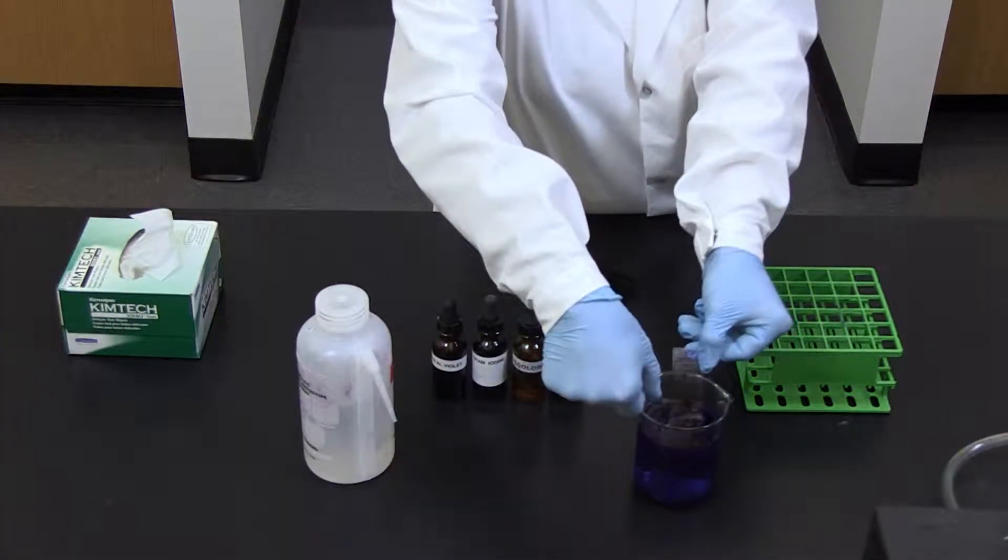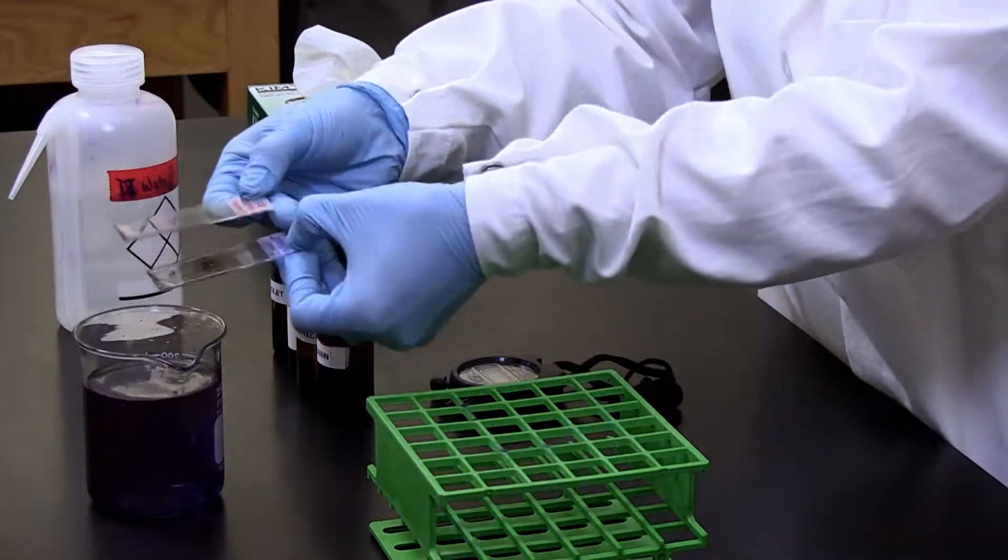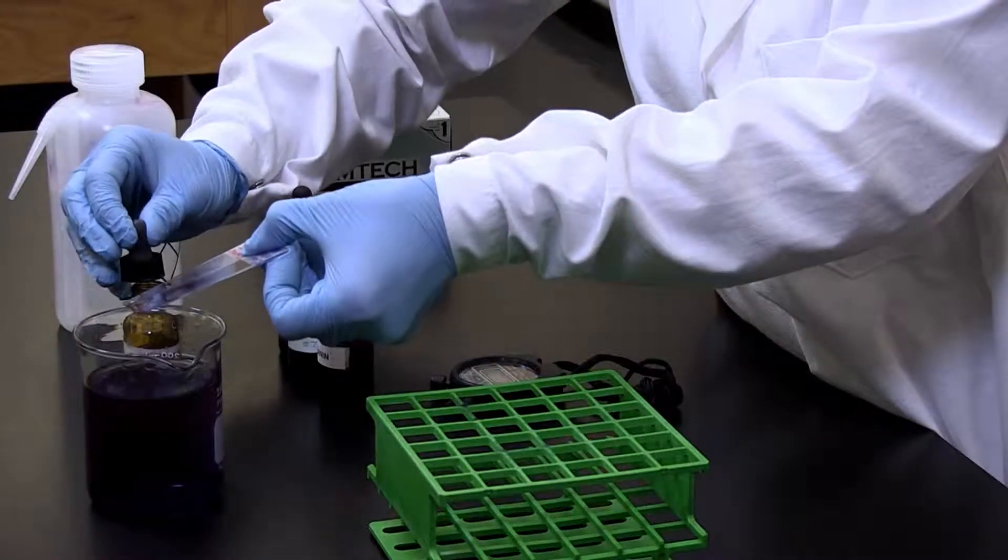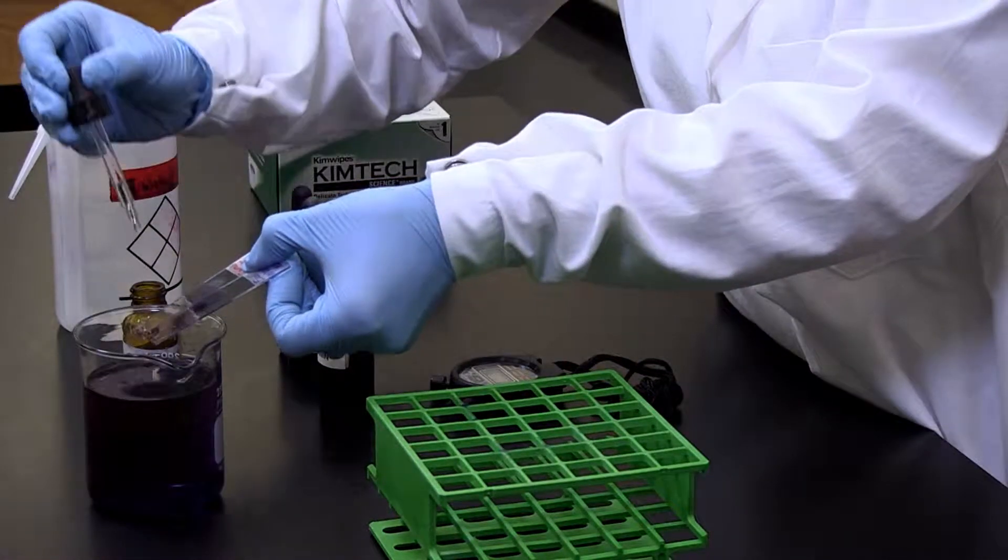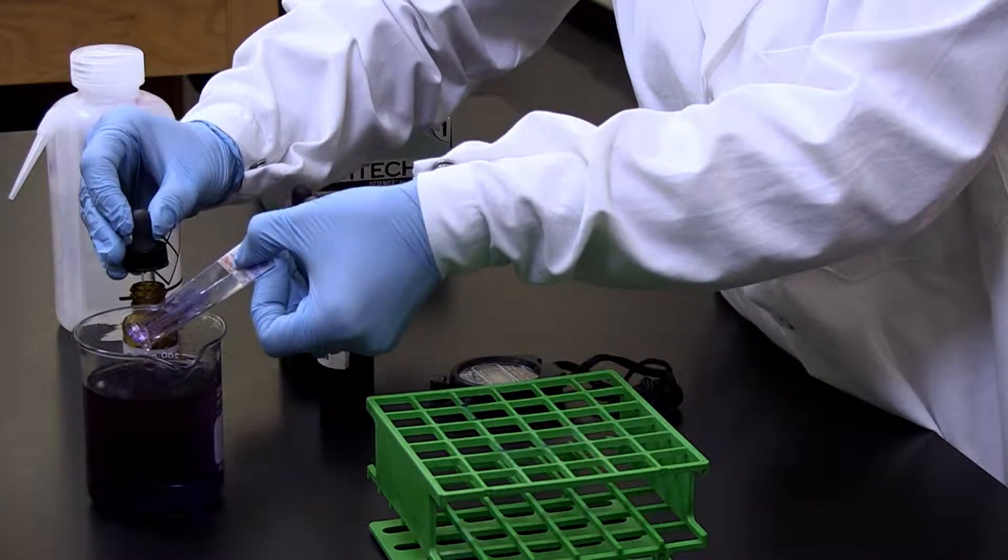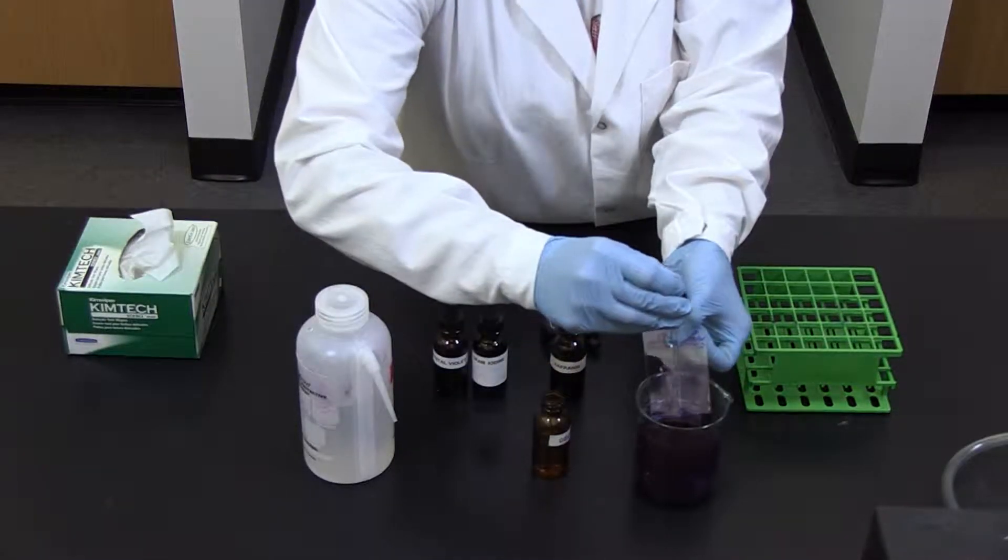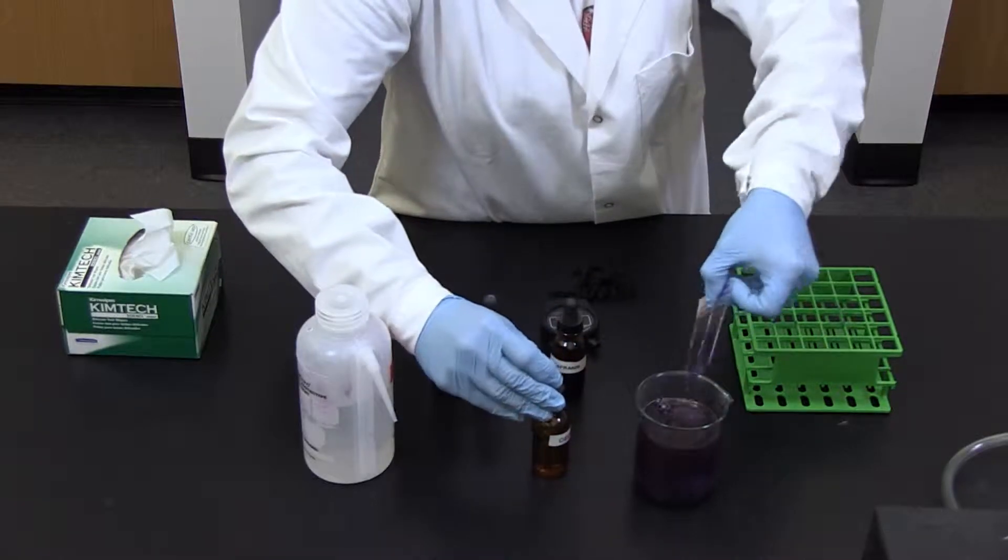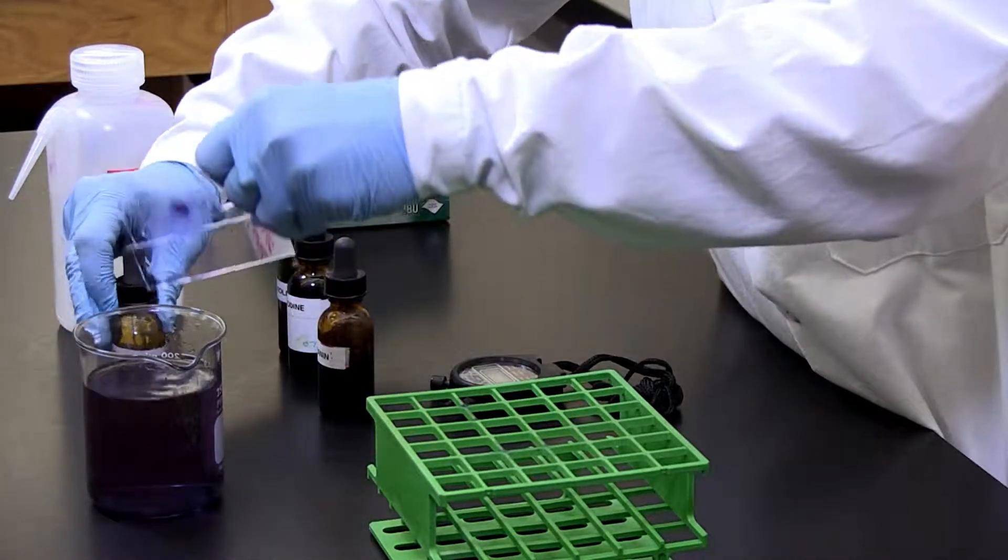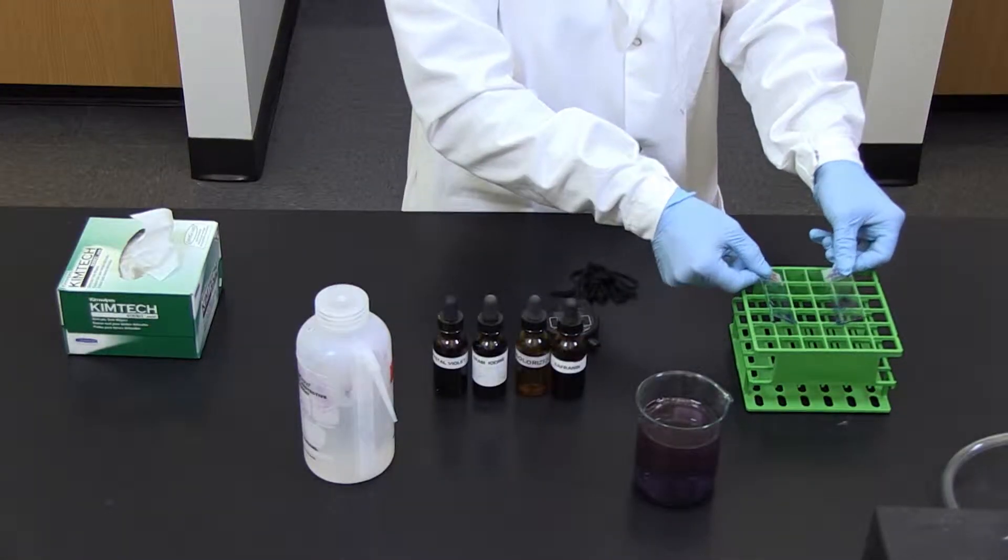Five, decolorize the smears with decolorizer, a mix of 95% ethanol and 5% acetone, for no more than 20 seconds. Allow the alcohol to flow over the slides until the runoff is colorless. The alcohol dissolves the lipids that are found in the outer membranes of gram-negative cells, allowing the crystal violet-iodine complex to escape. At this point, gram-negative cells are colorless, while gram-positive cells are still dark purple, if viewed under a light microscope.